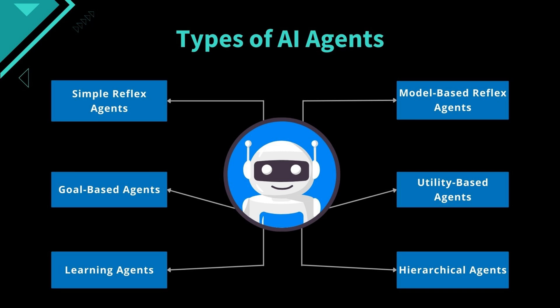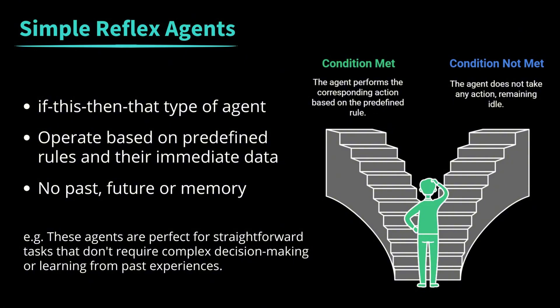Now let's dive into different types of AI agents. Understanding these types will help you choose the right agent for your needs. First up, we have simple reflex agents. Simple reflex agents operate based on predefined rules and their immediate data — think of them as the if-this-then-that type of agents. They make decisions solely on the current situation without considering the past or the future. For example, an email autoresponder that sends a predefined message whenever it receives an email with the subject line 'password reset' — it just responds based on that specific keyword. These agents are perfect for straightforward tasks that don't require complex decision-making or learning from past experiences.